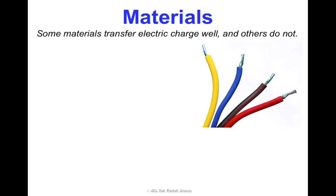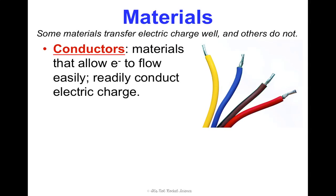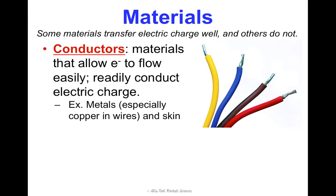Some materials are really good at transferring charge and others are not. These words are similar to ones you've heard before when we learned about thermal energy and heat transfer: conductor and insulator, though with a slightly different definition in the context of electricity. Conductors are materials that allow electrons — E- — to flow easily, so we could say they readily conduct electric charge. Things that conduct electric charge include metals, especially copper — a lot of wires have copper in them — and also your skin, which is a great conductor of electricity, which is why you feel shocks.